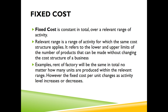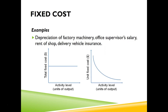Let's talk about fixed cost first. Fixed cost is constant in total within a relevant range of activity — basically where the same cost structure applies. A factory rent would be the same no matter how many units of products the business produces; the business would still have to pay rent. If I produce zero units, I still need to pay rent; if I produce a hundred units, the rent is still unchanged. Other examples include depreciation of machinery, supervisor salary, rent of shop, and insurance for delivery vehicle.